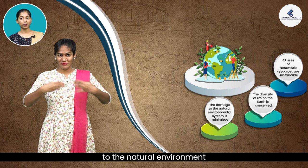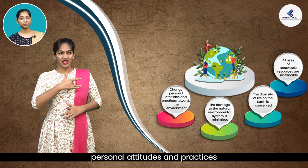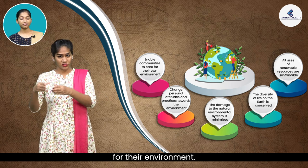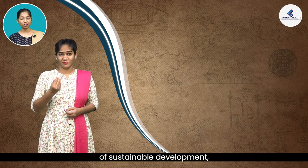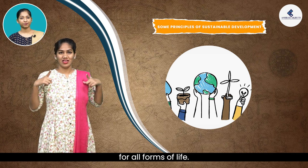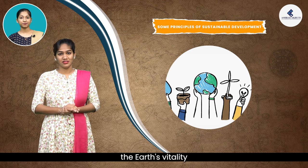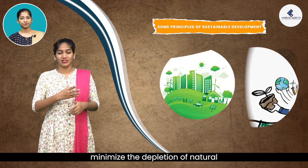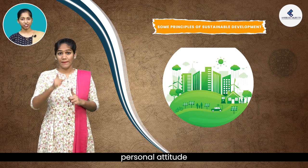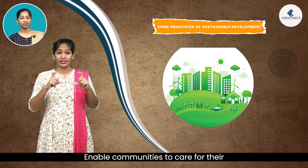The damage to the natural environment system should be minimized. We must change personal attitudes and practices towards the environment and enable communities to care for their environment. Some principles of sustainable development include: respect and care for all forms of life, improve the quality of human life, conserve the Earth's vitality and diversity, minimize the depletion of natural resources, change personal attitudes and practices towards the environment, and enable communities to care for their own environment.